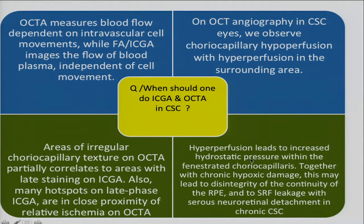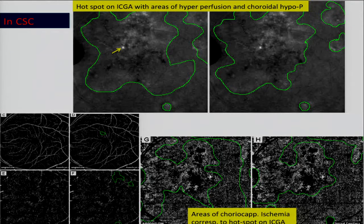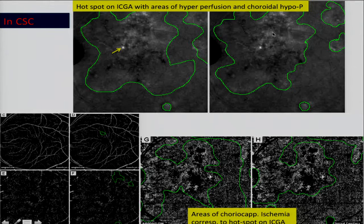Hyperperfusion leads to increased hydrostatic pressure. This is basically the pathogenesis of CSC within the fenestrated capillaries. This increased hydrostatic pressure contributes to leakage, chronic hypoxic damage, disintegration of the RPE, and then fluid in the subretinal space, leading to chronic CSC. Probably when you need to do this imaging is when CSC starts becoming chronic and you have a hotspot with mottled fluorescence on ICGA. This hotspot corresponds to the area of low perfusion or ischemia on OCT.